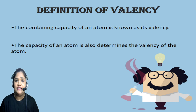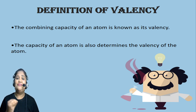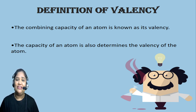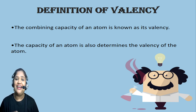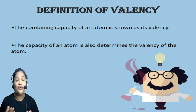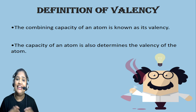Valency is nothing but the combining capacity of an atom. Some atoms like to donate or gain electrons while others share them to combine with another atom. In simple language, combining power or combining capacity is known as valency.